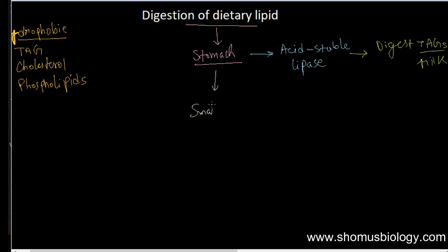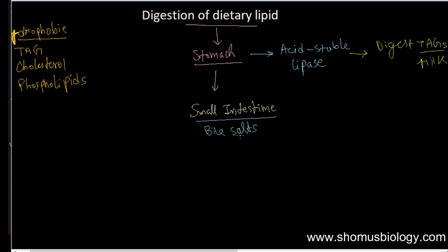But that's not enough. The process of fat digestion begins in the stomach but it continues to the small intestine, because this is where the maximum absorption and breakdown of lipid — the digestion of lipid — will be done. And that is where bile salts come in.